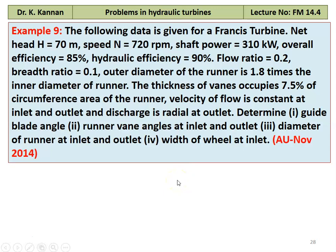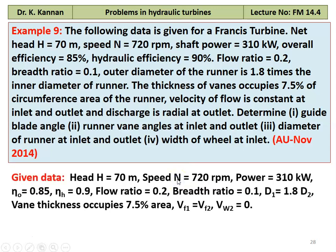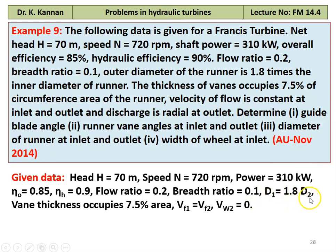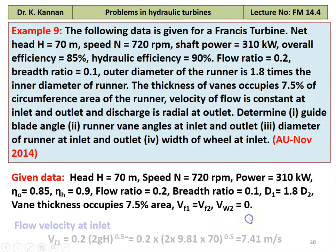Given data: head equal to 70 meter, speed 720 RPM, power 310 kilowatt, overall efficiency 0.85, hydraulic efficiency 0.9, flow ratio 0.2, breadth ratio 0.1. The outer diameter D1 is the peripheral diameter, where D1 equal to 1.8 times of D2. Vane thickness occupies 7.5% of area. Vf1 equal to Vf2, and Vw2 equal to 0.